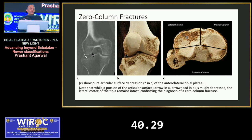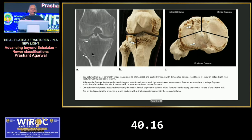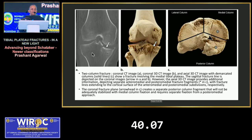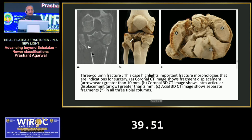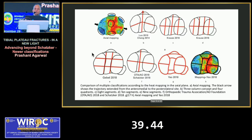There is a concept of a zero column fracture — only central depression where the periphery or rim of the condyle is intact — and here the management will be totally different. This can better be visualized in three-dimensional imaging. One column means only one condyle; two column means both condyles or a posterior portion is involved. This information helps in planning the treatment approach and the implant, giving better outcomes even in three-column involvement.